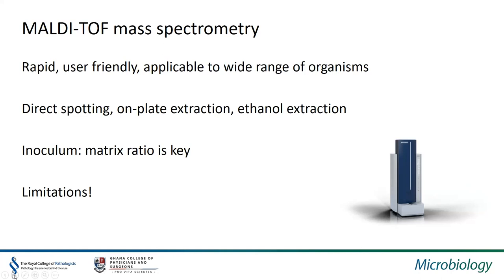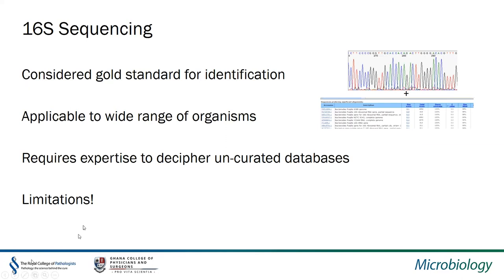16S sequencing is our ultimate way of identifying organisms and is still considered the gold standard. It applies to a wide range of organisms. Over many years we've learned which strains we can rely on in the databases. It does require some expertise to interpret uncurated databases, as some organisms placed there are clearly out of place.